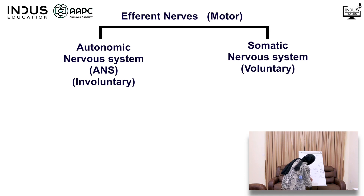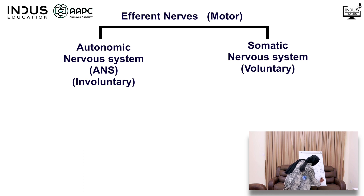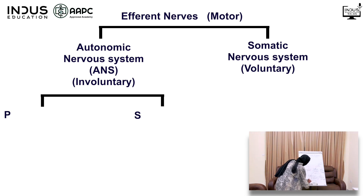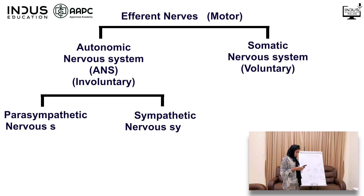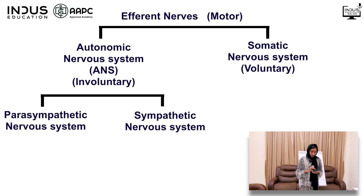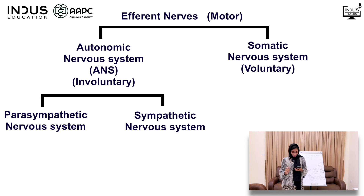The Peripheral Nervous System is divided into Autonomic and Somatic. Autonomic controls Involuntary Actions, and Somatic controls Voluntary Actions. The Autonomic Nervous System is further divided into Parasympathetic and Sympathetic.